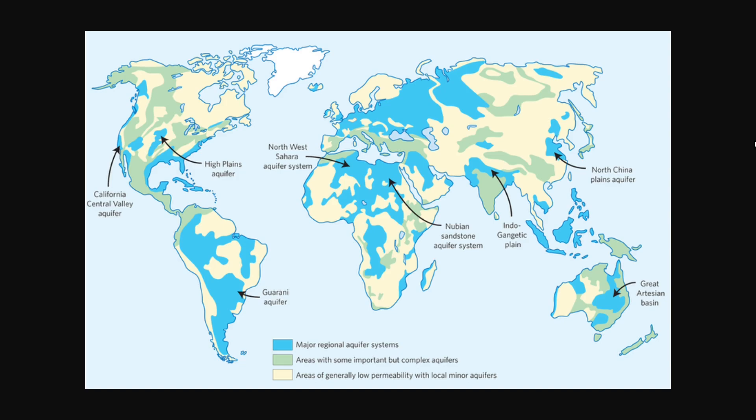If you live in the areas shaded blue on this map, and somewhat the areas shaded green, you could be living on top of water. This is because the areas shaded blue and green here denote aquifers of the earth.